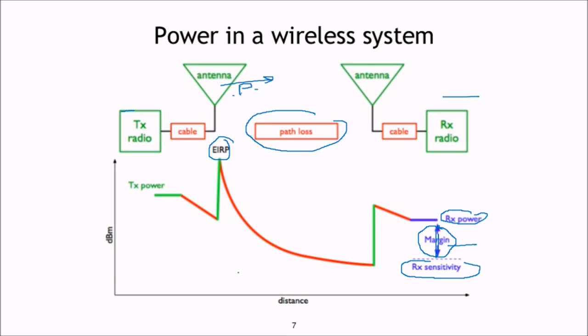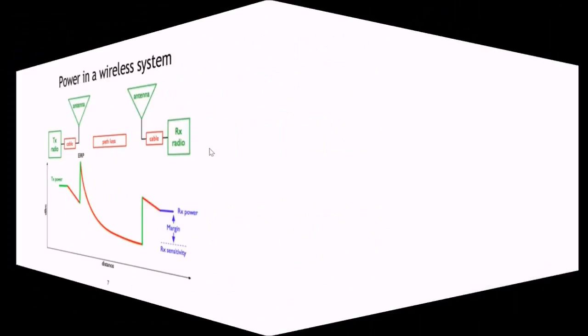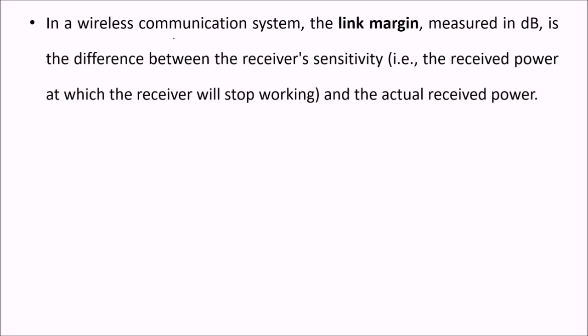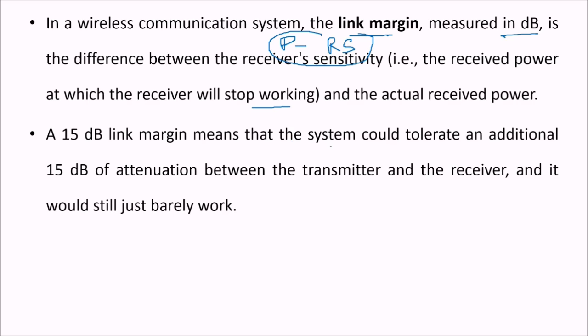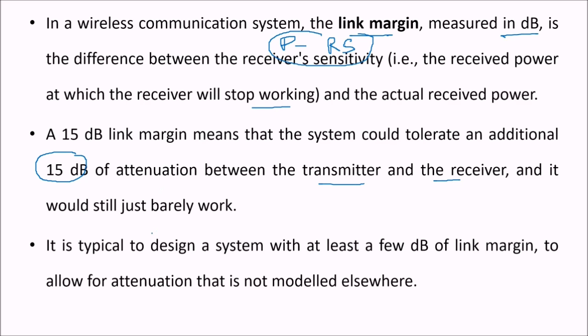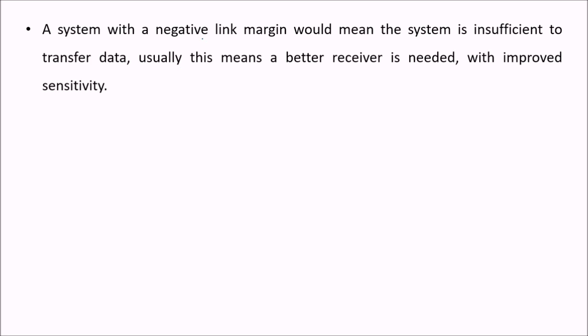Along with the distance some losses take place. We carry out all these computations in dB or decibel. In a wireless communication system, the link margin, measured in dB, is the difference between the receiver's sensitivity - the received power at which the receiver will stop working - and the actual received power. A 15 dB link margin means that the system could tolerate an additional 15 dB of attenuation between the transmitter and the receiver and it would still just barely work. It is typical to design a system with at least a few dB of link margin. This margin allows for attenuation that is not modeled elsewhere. A system with negative link margin means the system is insufficient to transfer data, usually meaning a better receiver is needed with improved receiver sensitivity.